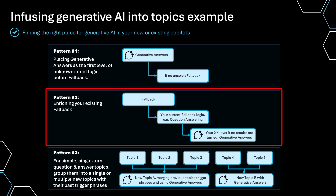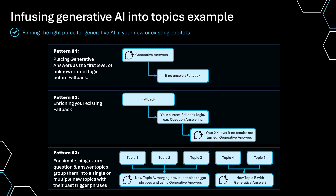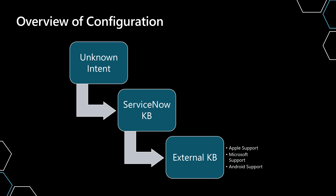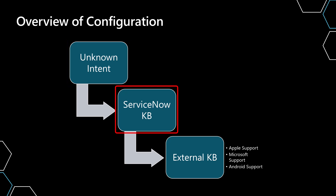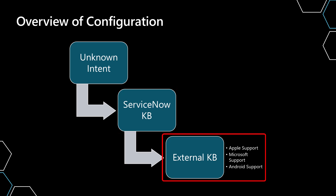So it's a little bit different than what's documented in Pattern 2, in that we're going to use generative answers not once but twice in this design. Just to look at the architecture we're going to be exploring today: we will fire on the unknown intent, then move to the ServiceNow knowledge base using generative answers to see if there's something there. If nothing's returned, we move on to the external knowledge base check using generative answers — using Apple support, Microsoft support, and Android support — in the case that we don't find the answers in the internal ServiceNow knowledge base.